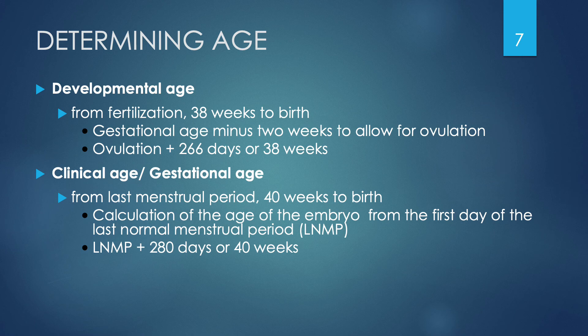If we look at the clinical or gestational age, we start at the last menstrual period as day one, and from day one through until delivery is 40 weeks. We calculate the age of the embryo with the clinical age from the very first day of the last normal menstrual period, abbreviated LNMP. So: LNMP plus 280 days or 40 weeks.